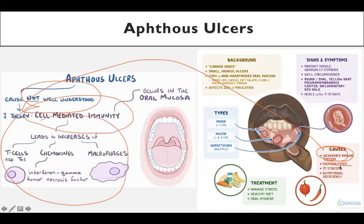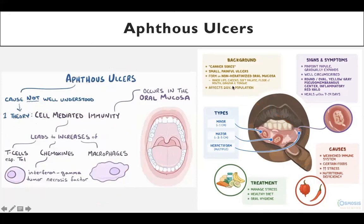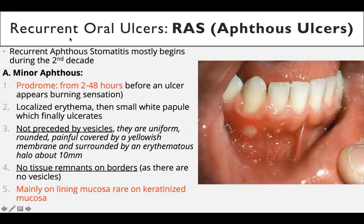Certain foods and increased stress can cause aphthous ulcers, as can nutritional deficiency. Treatment includes identifying and avoiding trigger foods, maintaining a healthy diet, and good oral hygiene to prevent a weakened immune system. Recurrent aphthous ulcers, also called recurrent aphthous stomatitis, mostly begin during the second decade of life — age 11 to 20.